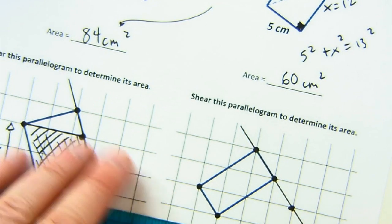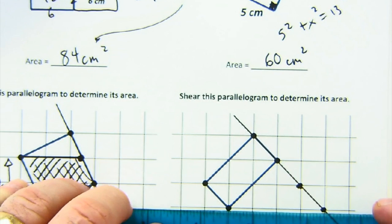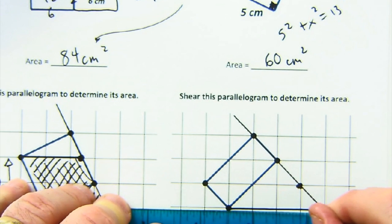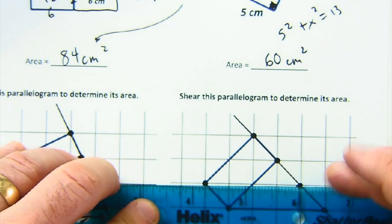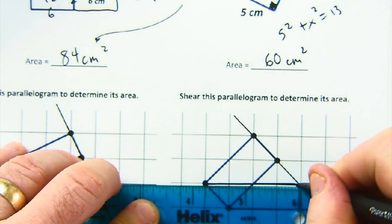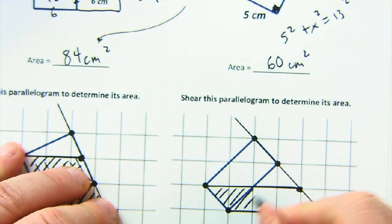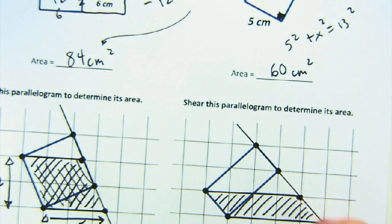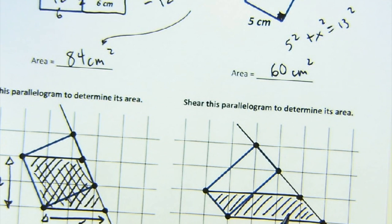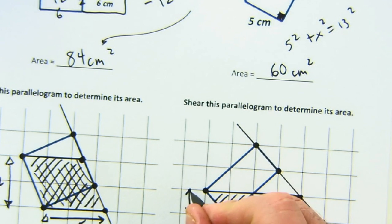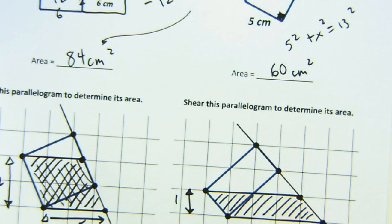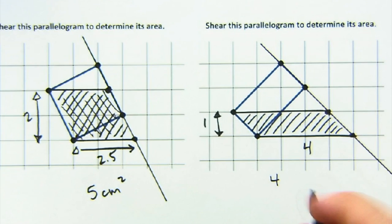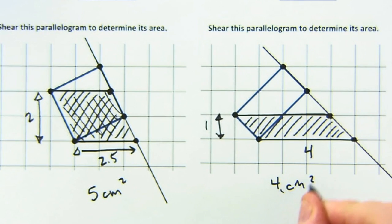And it will create a new parallelogram. This one is easier for me to calculate, though. And so, here it is. Notice the base stayed the same. The height stayed the same because I sheared in a parallel manner. But this has a base of 1, 2, 3, 4. And this has a height of 1. 4 times 1 is 4 centimeters squared.